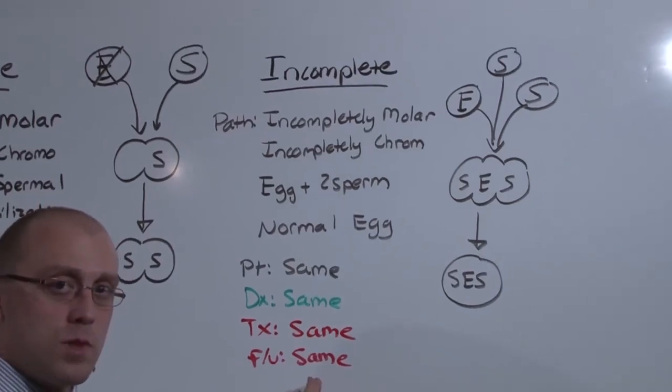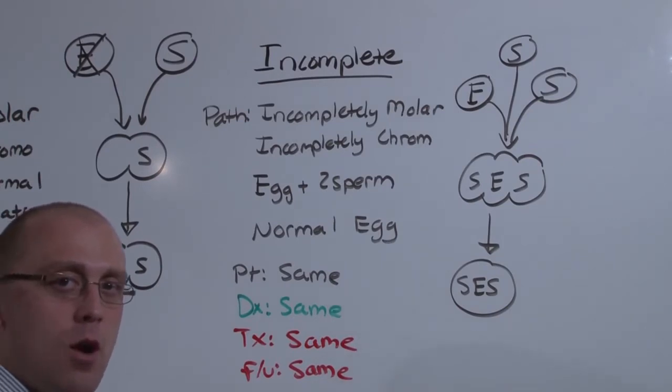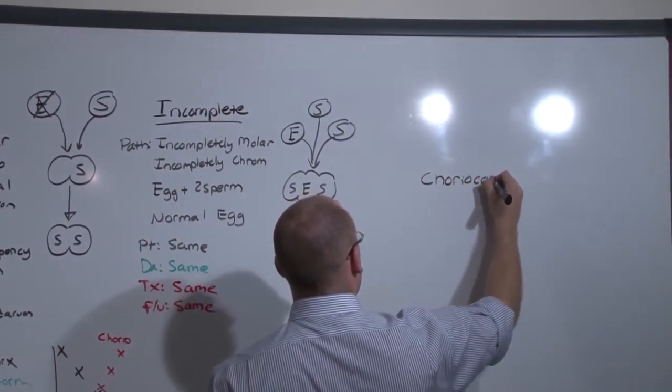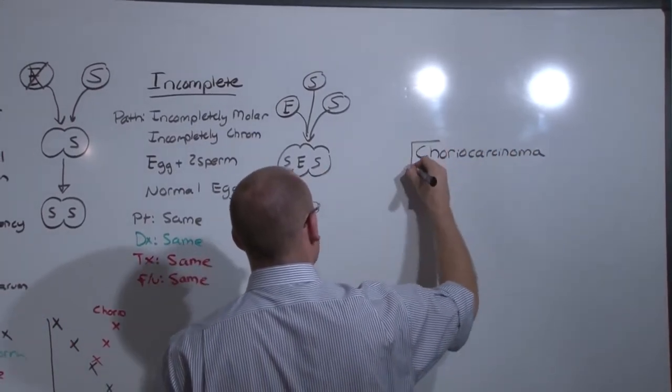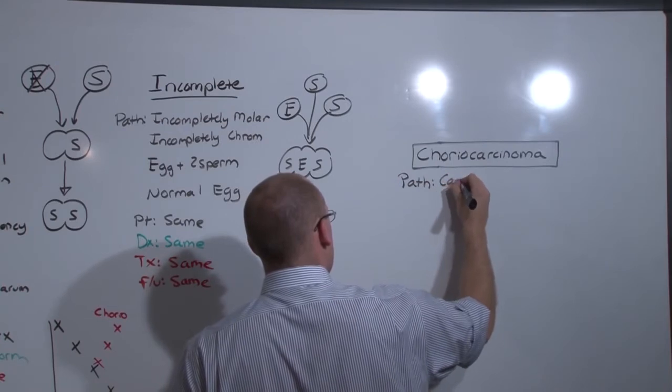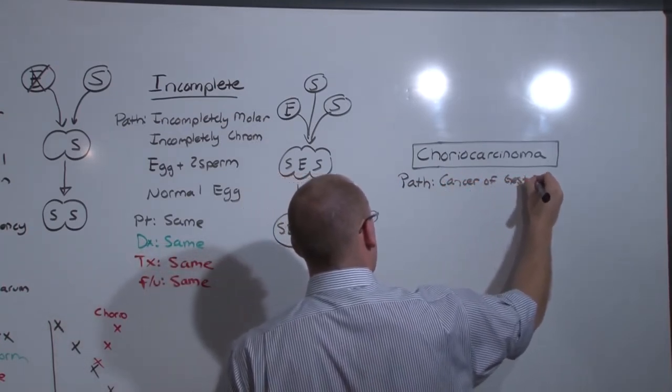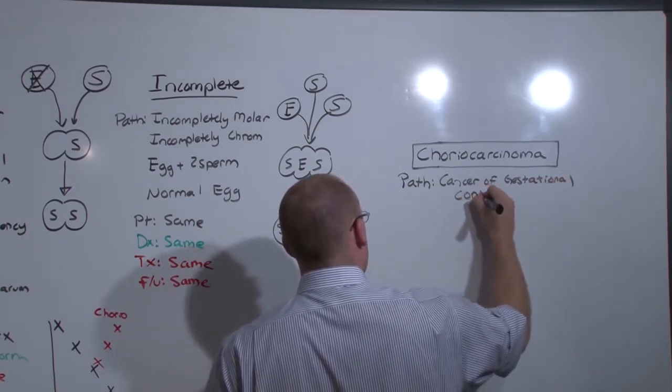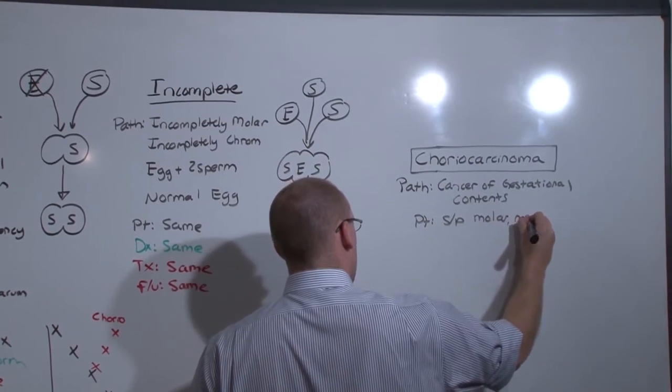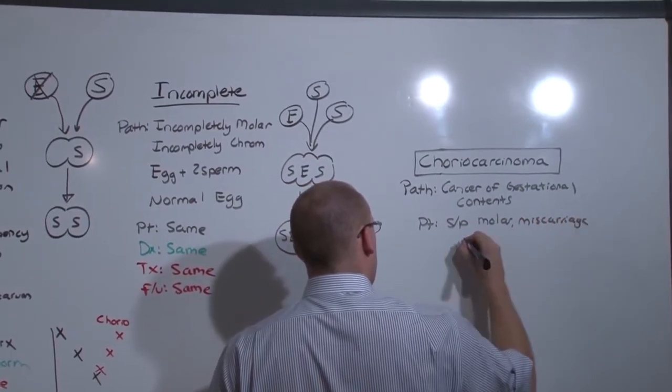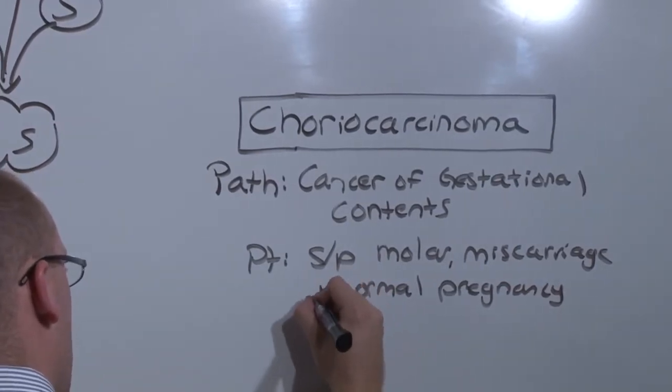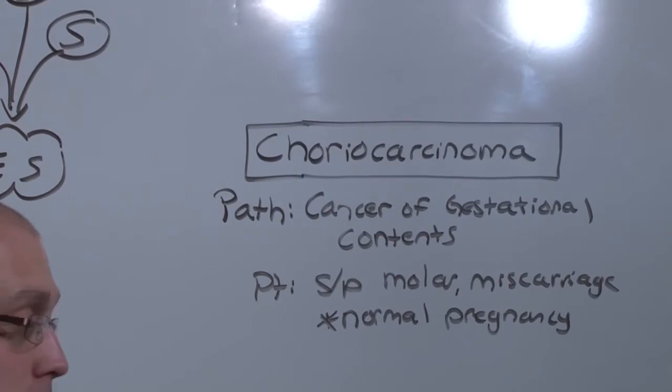And this is why any pregnancy, but especially molar pregnancies, are a risk factor for causing choriocarcinoma. The path of this cancer is that it is a cancer of gestational contents. Which means that any pregnancy, status post molar pregnancy, a miscarriage, and even a normal pregnancy, you can develop this cancer. If one develops after a normal pregnancy, it is increased in its severity, because this normally does not happen.